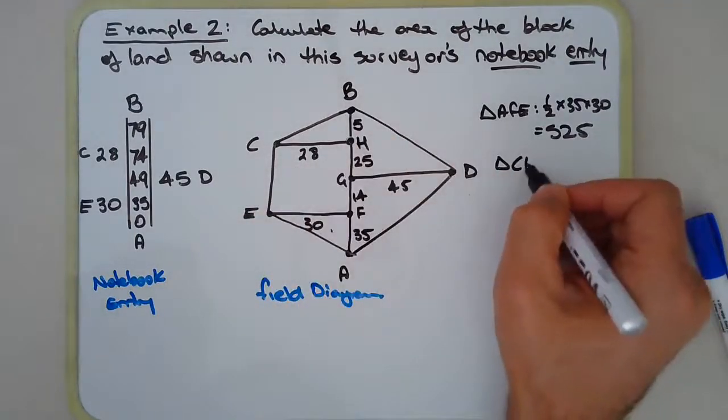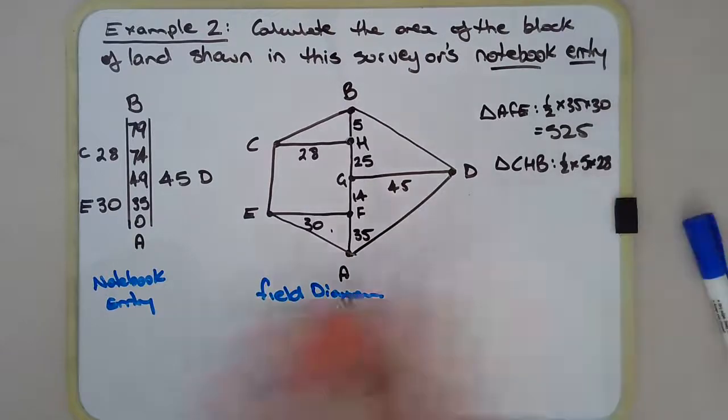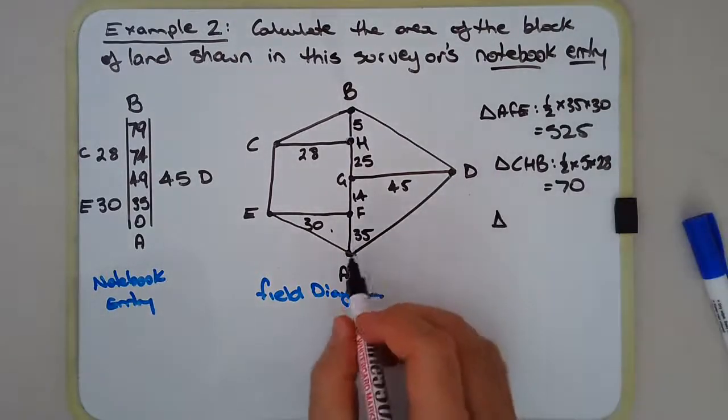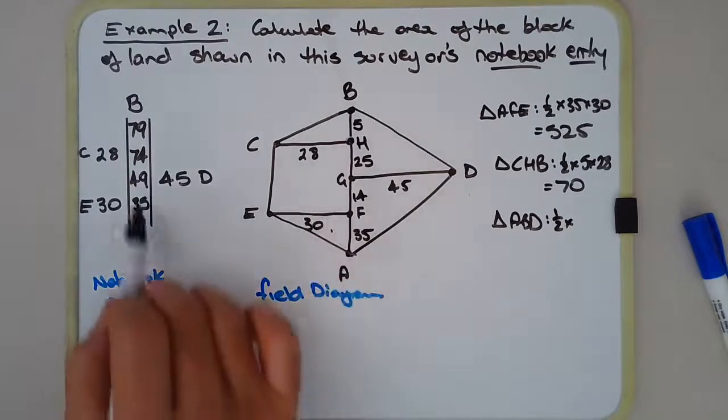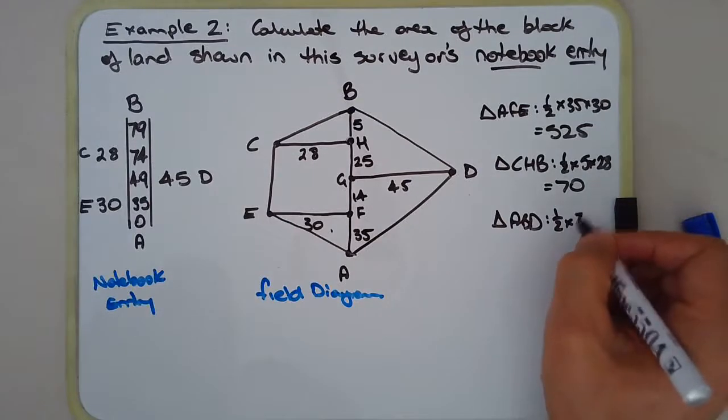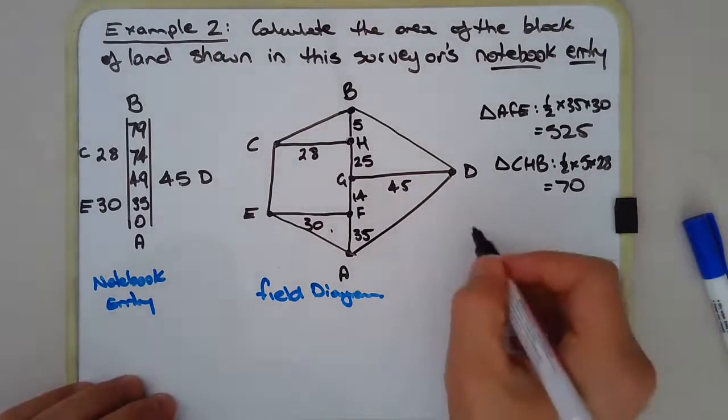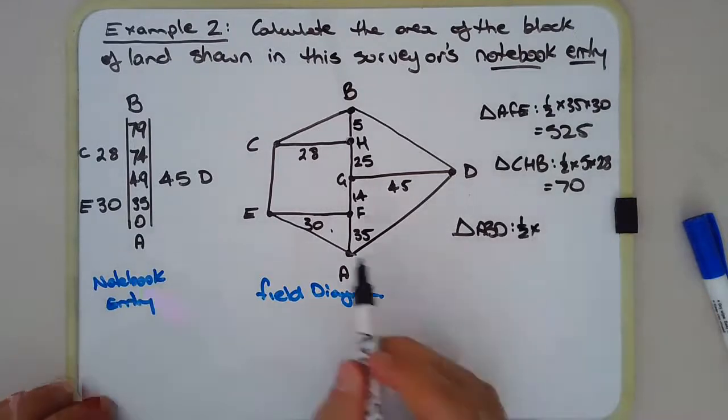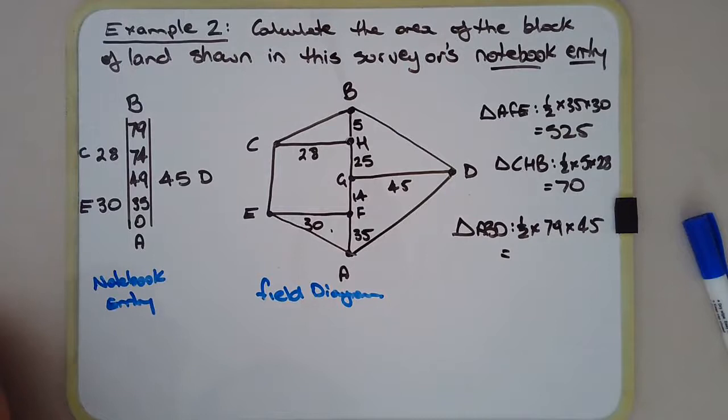Triangle C, H, B. Half times 5 times 28. That's 70. Triangle A, B, D. The large triangle now. Half times. Now what did we say it was? You can read it from the field diagram. It's 79 meters. Times 45. Just ran out of space there. So make sure I'll just do that a little bit neater. Sorry about that. Triangle A, B, D. Half times 79. Times 45. And that's 1777.5.